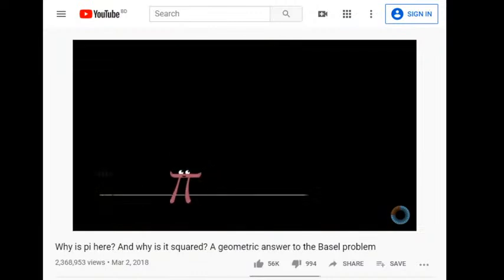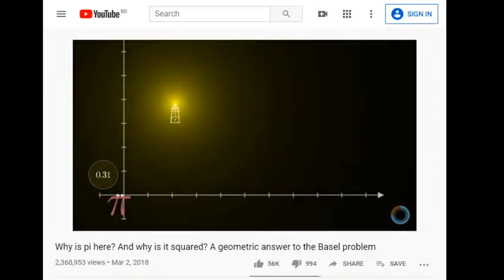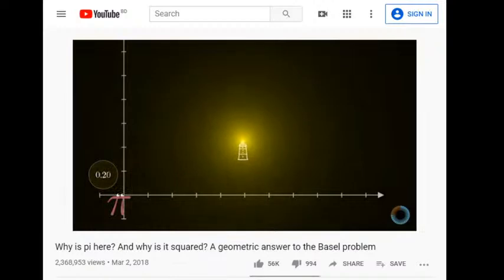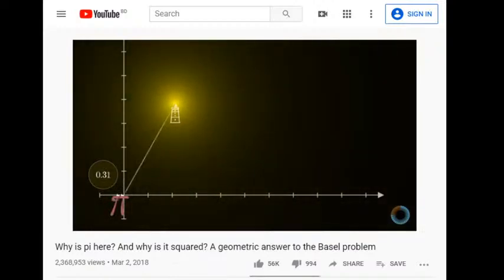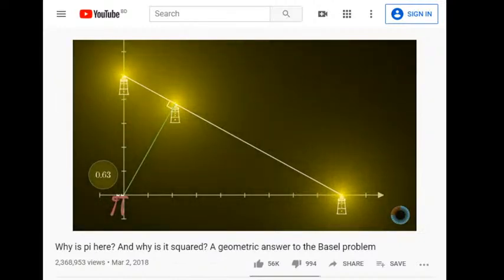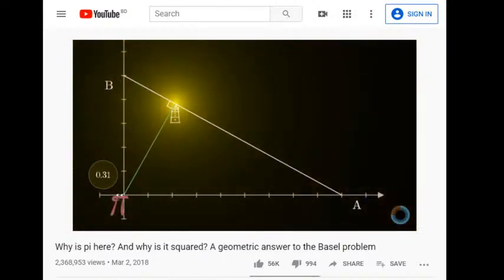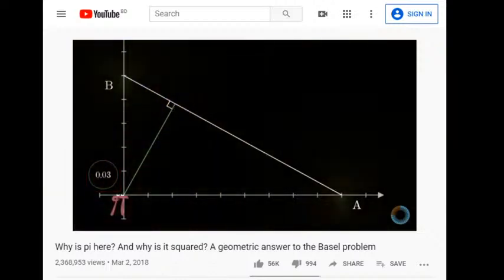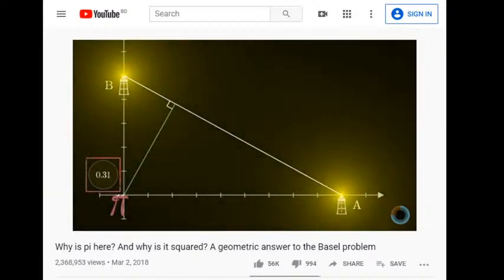Think of an observer at the origin of the xy plane, and a single lighthouse sitting out somewhere on that plane. Now draw a line from that lighthouse to the observer, and then another line perpendicular to that one at the lighthouse. Now place two lighthouses where this new line intersects the coordinate axes, which I'll call lighthouse A on the left and lighthouse B on the upper side. It turns out the brightness that the observer experiences from that first lighthouse is equal to the combined brightness experienced from lighthouses A and B together.